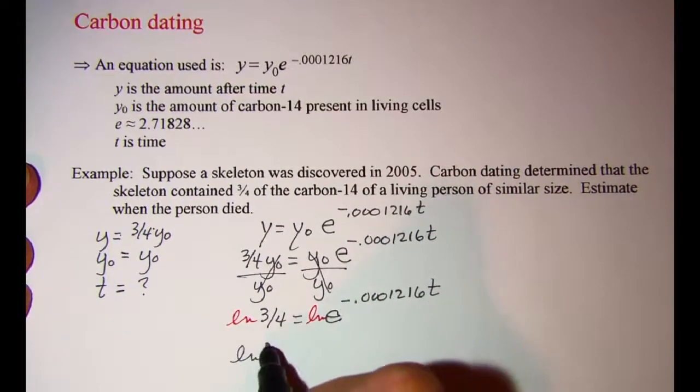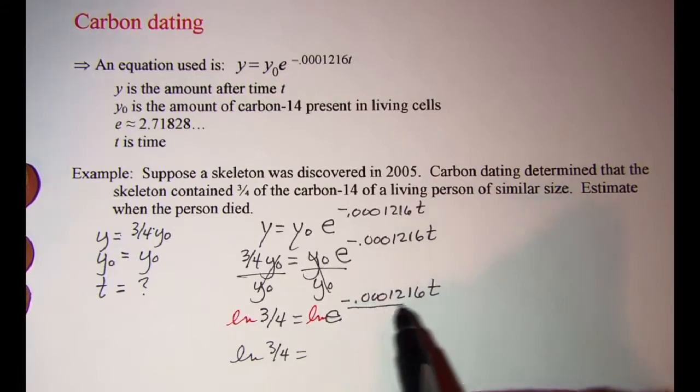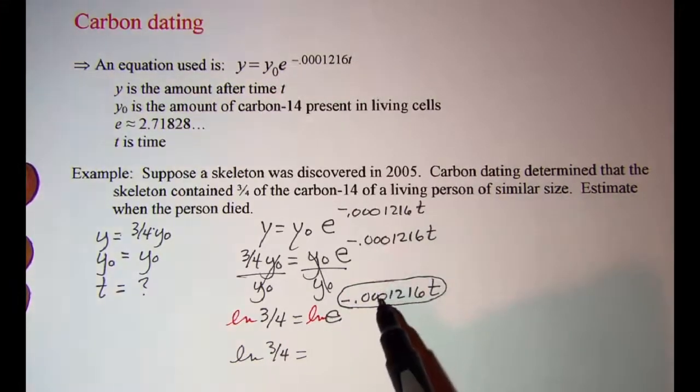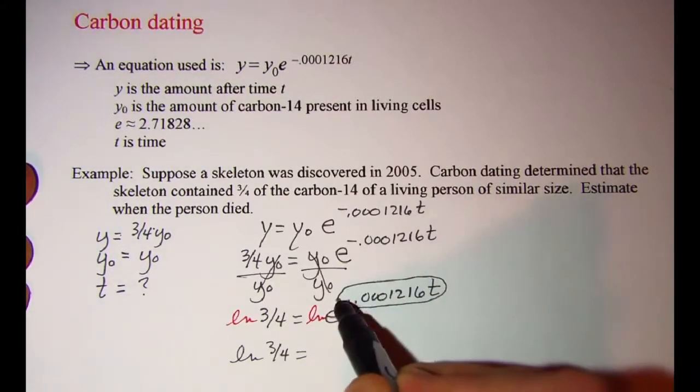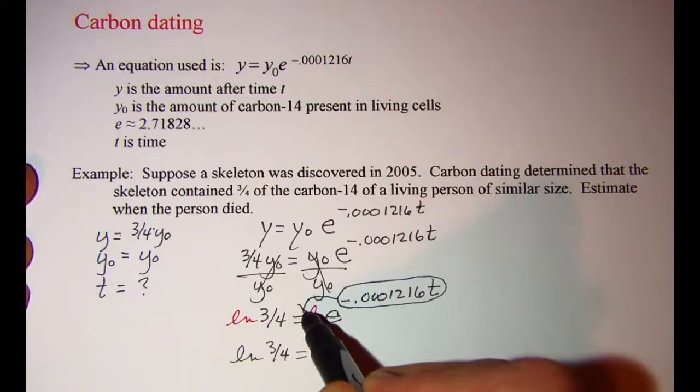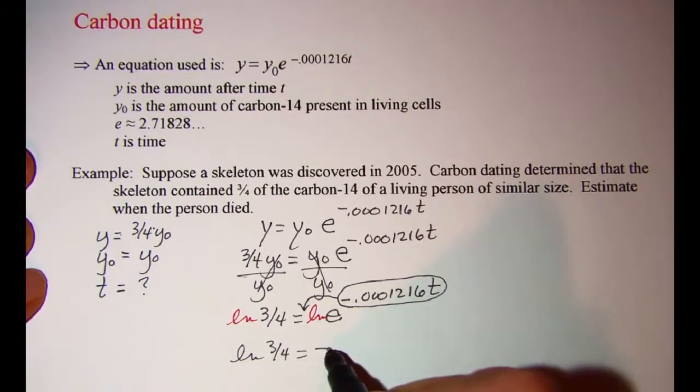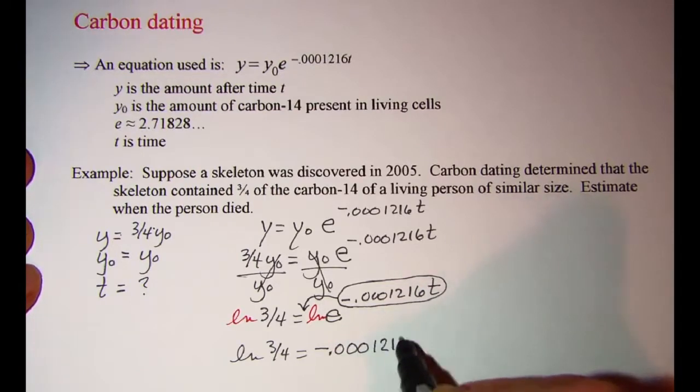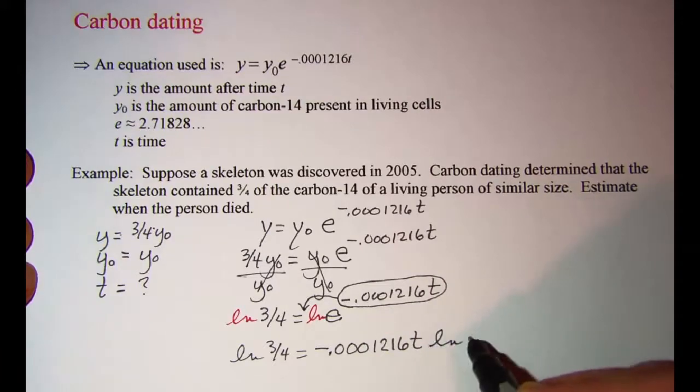We are going to use the property of logarithms that allows us to bring this exponent that is on the argument of the logarithm out in front of the logarithm as the coefficient. So we now have negative 0.0001216 times t multiplied by the ln of e.